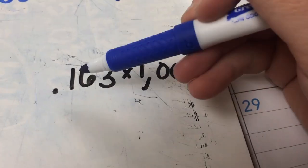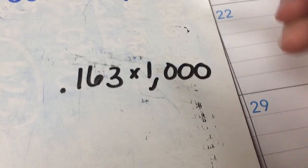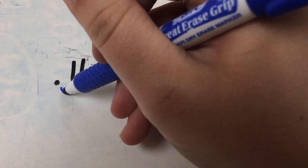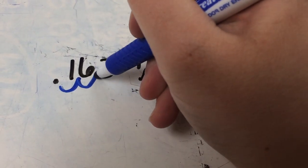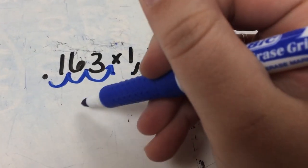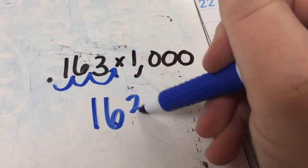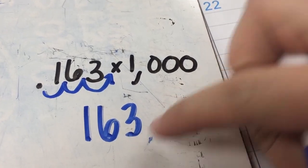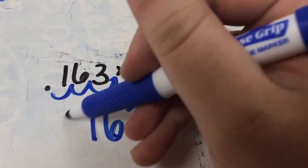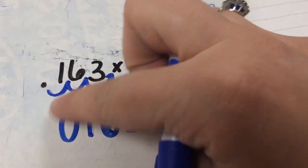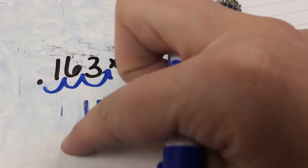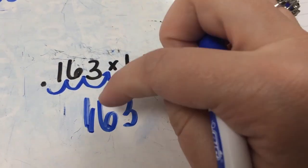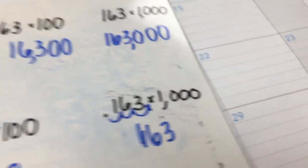And lastly, we have 0.163 times 1,000. So we have how many zeros? One, two, three. So we're going to take our decimal and move it over one, two, three hops, and it goes to the end. But if there's nothing after a decimal point, you don't need it. You get rid of that zero altogether and it just is 163. So you don't need that decimal because there's nothing after it — it's just 163.